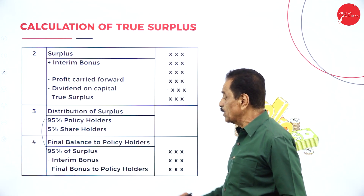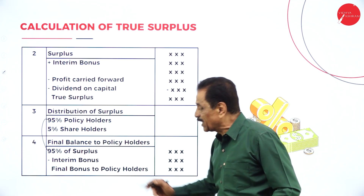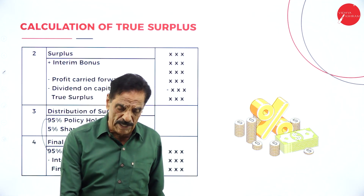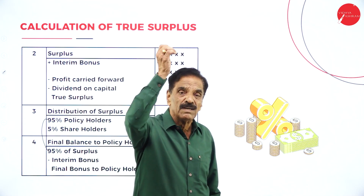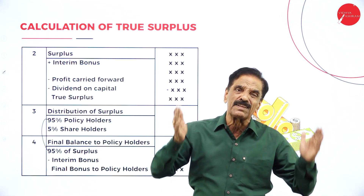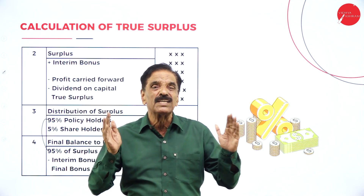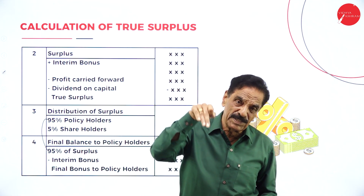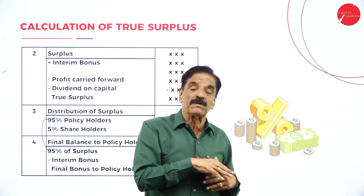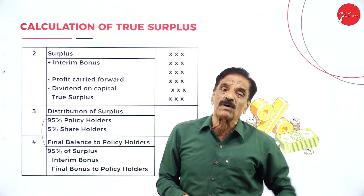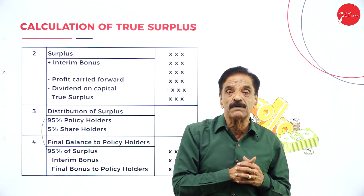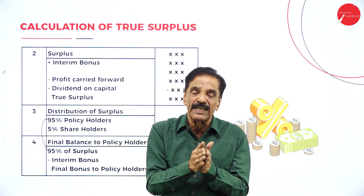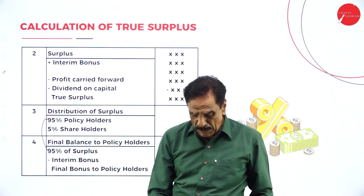The final one: final balance to the policyholder — 95% of the surplus calculated, minus interim bonus, gives the final bonus to the policyholder. This is a definite question from the examination point of view. The University of Mysore asks this type of question every year — very simple and easy to do. The four steps: first find out the surplus; out of the surplus find the true surplus; distribute the surplus among policyholder and shareholder — 95% to policyholder, 5% to shareholder; then the final bonus payable to policyholder.